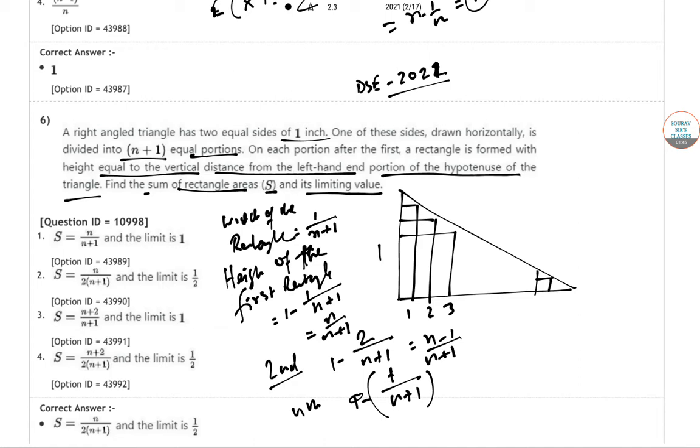So sum of these areas will be 1 by n plus 1 times the sum of n by n plus 1, n minus 1 by n plus 1, and so on, down to 1 by n plus 1.